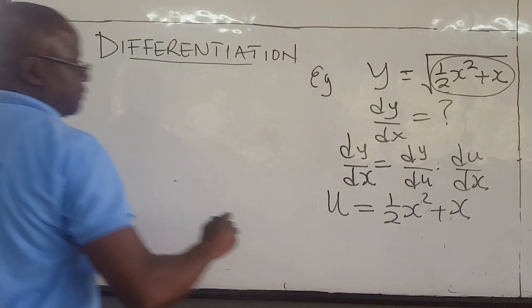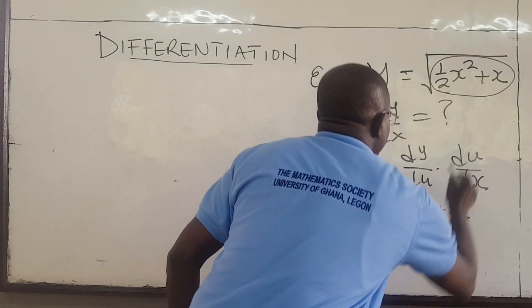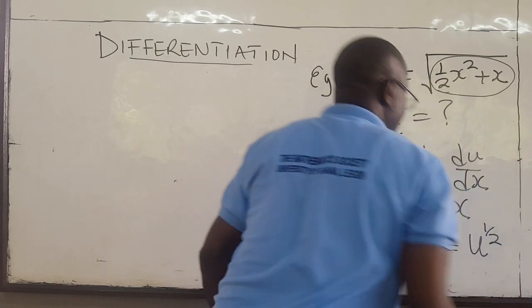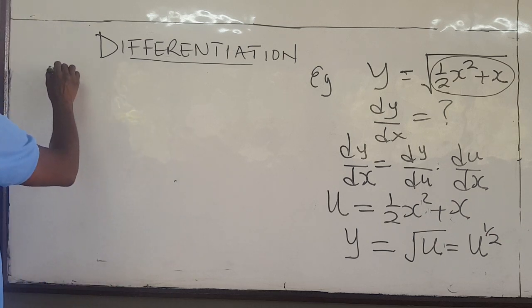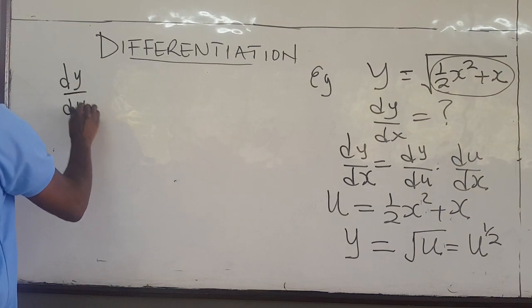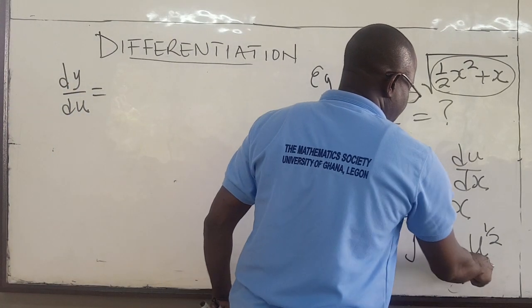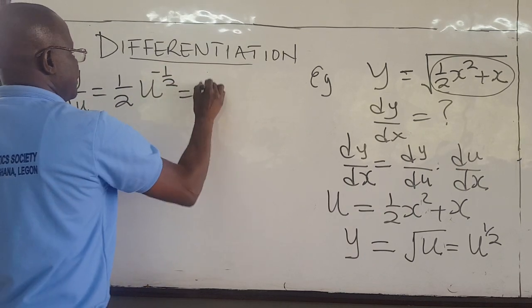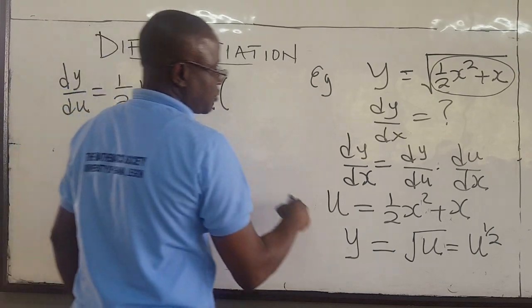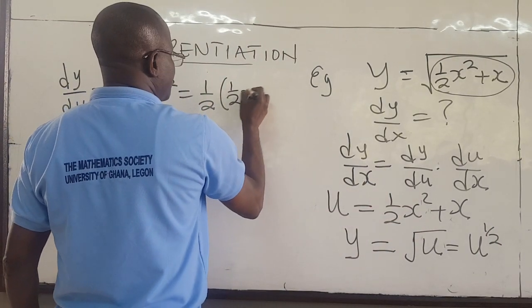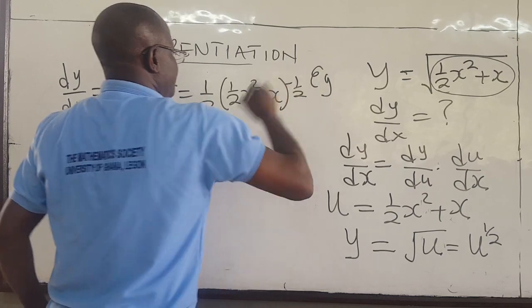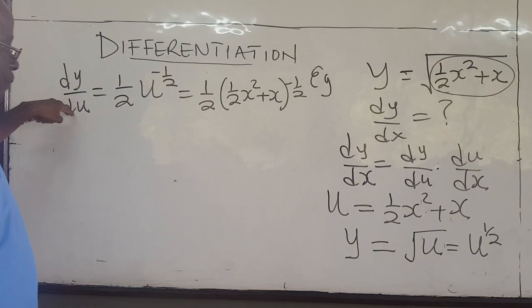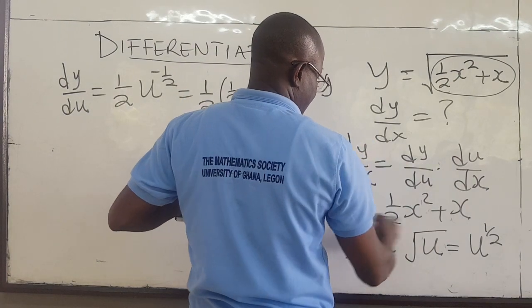Let u equal the inner function, which is 1.5x squared plus x. This implies that y is equal to the square root of u, or u raised to the power one-half. This means that dy/du is equal to the derivative of u to the one-half, which is one-half u to the negative one-half by the power rule. In terms of x, this is one-half times x squared plus x, raised to the power negative one-half. Now we need du/dx — find the derivative of the inner function.